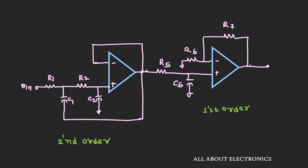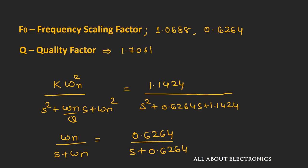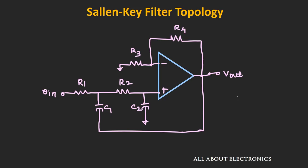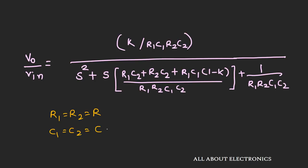Once we know the transfer function, the next step is to determine the R and C values. The third-order filter consists of a second-order Sallen-Key filter followed by a first-order low pass filter. For the second-order section with R1 equal to R2 equal to R and K equal to 1 (unity gain Sallen-Key), Q is given by (1/2)√(C1/C2), allowing us to get the desired Q simply by adjusting C1 and C2.